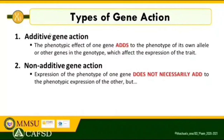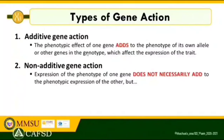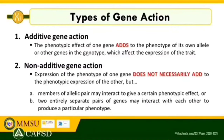The second type of gene action is non-additive gene action. The expression of the phenotype of one gene does not necessarily add to the expression of the other, but members of an allelic pair may interact to give a certain phenotypic effect, or two entirely separate pairs of genes may interact with each other to produce a particular phenotype. For letter A we are referring to dominance gene action, and for letter B we are referring to epistasis or interaction.